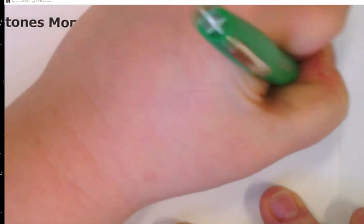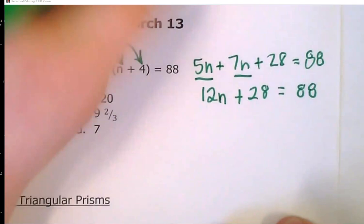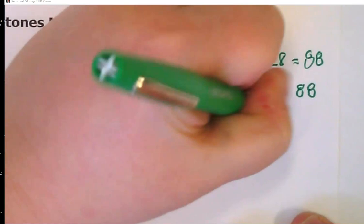Now again, I do want to get my variable, which is n, by itself. So I'm going to take this 28, which is my constant, and I'm going to remove it. So I'm going to subtract 28 from this side, and I'm going to subtract 28 from this side.